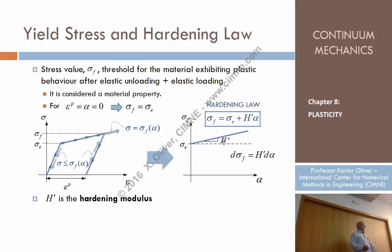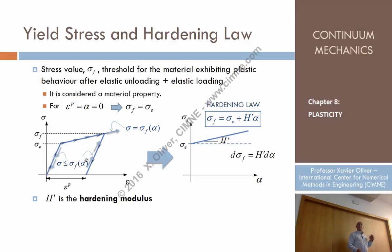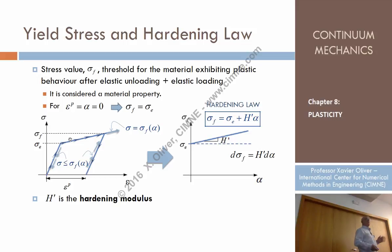The larger H prime is, the larger the hardening. If that slope is very high, it means we gain yield stress rapidly with plastic deformation. The higher the hardening modulus, the higher the slope and the more hardening the material exhibits. So alpha as a variable and H prime as a parameter together characterize the level of hardening of the material.